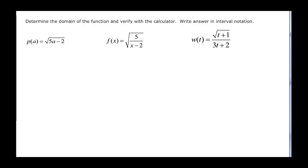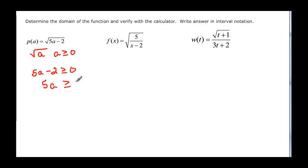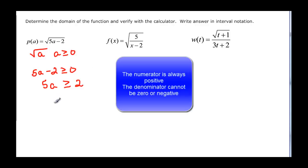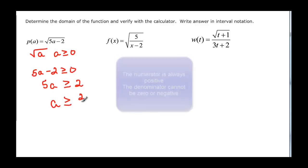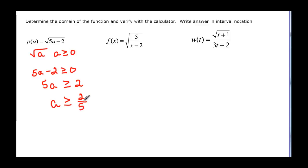So now we have to talk about the domain of a function when it's written in function notation. First, think about what we know about square roots: the value underneath the square root has to be greater than or equal to zero, or else we don't have a real number. So here we say five a minus two has to be greater than or equal to zero. So five a is greater than or equal to two — adding or subtracting doesn't change the inequality sign — and dividing by positive five doesn't change the sign either, so a is greater than or equal to two-fifths. In interval notation, the smallest value is two-fifths, so it's bracket two-fifths to infinity with a parenthesis.